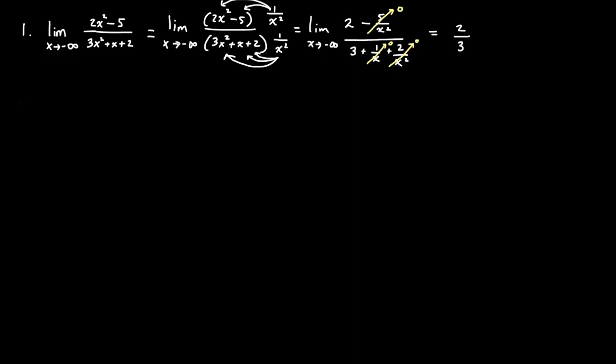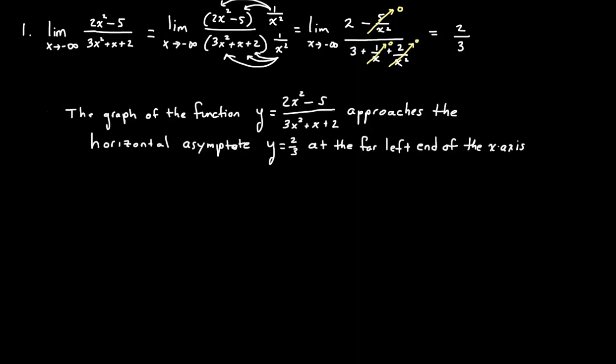I'm not asking you to show all that work, I just want to review it. If we turn this into a function, the graph of y equals approaches the horizontal asymptote y equals two-thirds at the far left, because x is going smaller without bound — x is approaching negative infinity. Had I asked the same question where x is approaching positive infinity, it would still come out to be two-thirds, and we would say on the far right end of the x-axis.